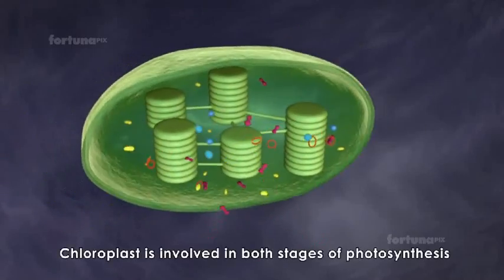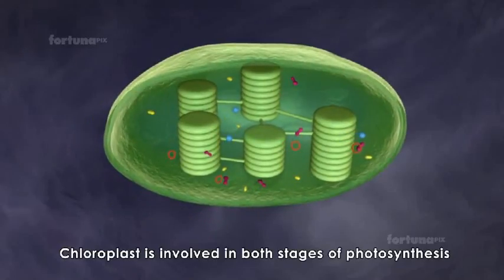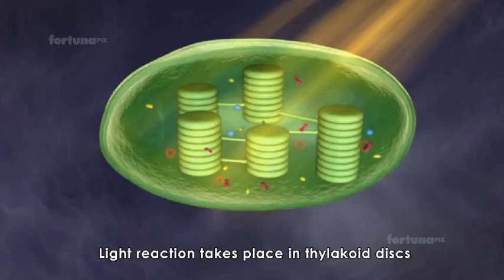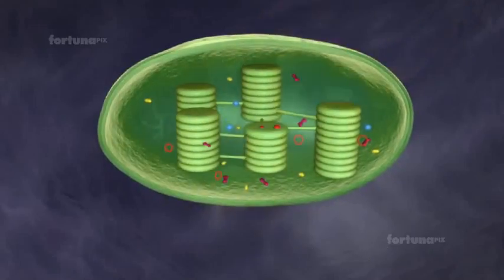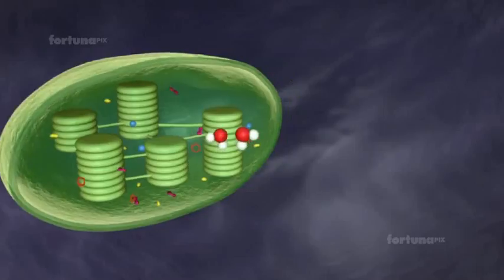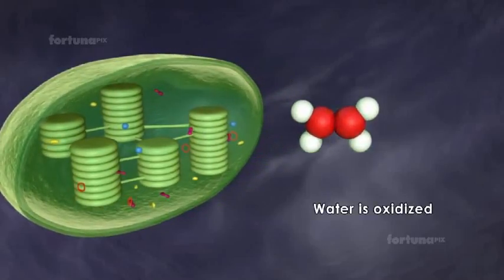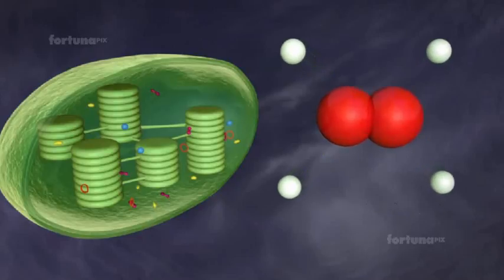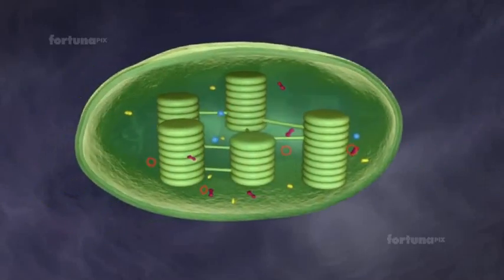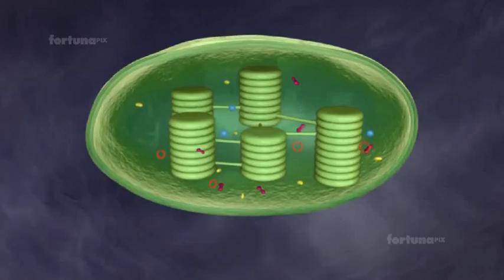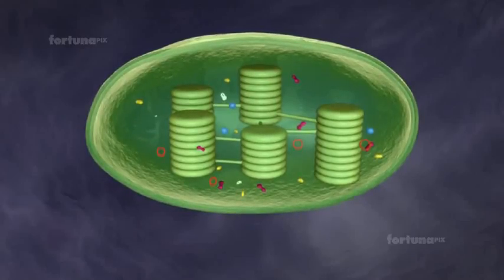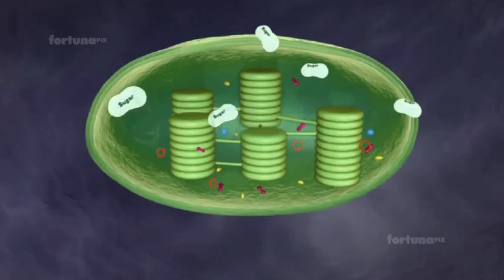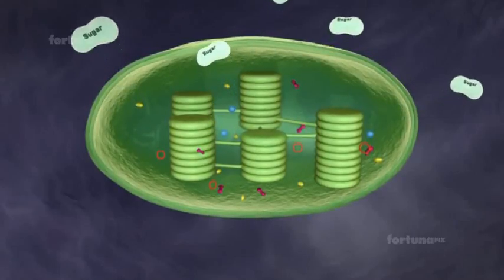The chloroplast is involved in both stages of photosynthesis. The light reaction takes place in the thylakoid discs. During this reaction, water is oxidized and oxygen is released. The dark reaction occurs outside of the thylakoids in the stroma. In this reaction, sugar molecules and other organic molecules necessary for cell function and metabolism are produced.